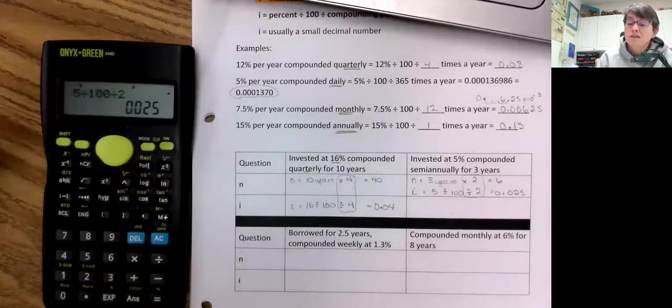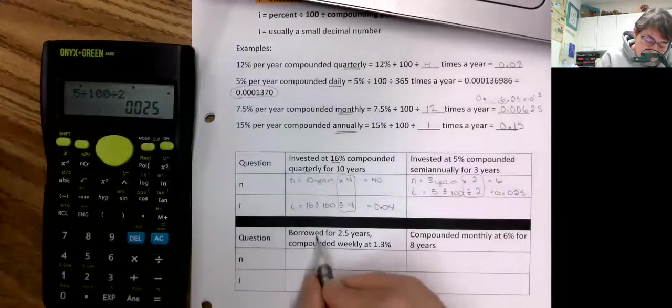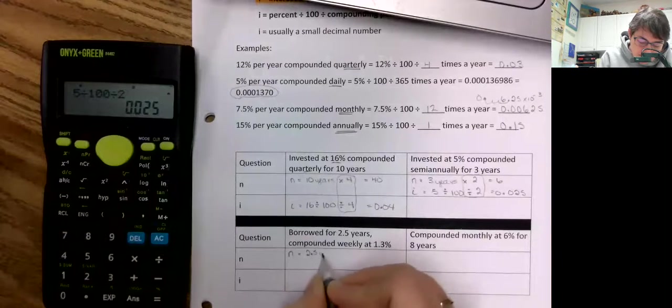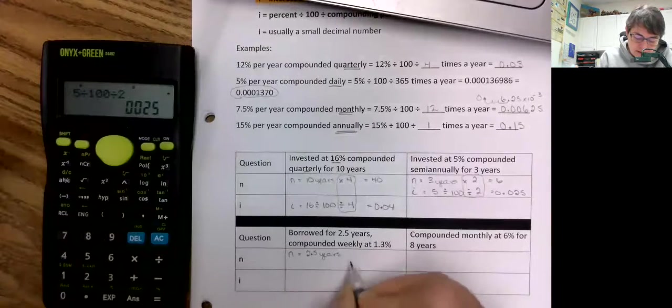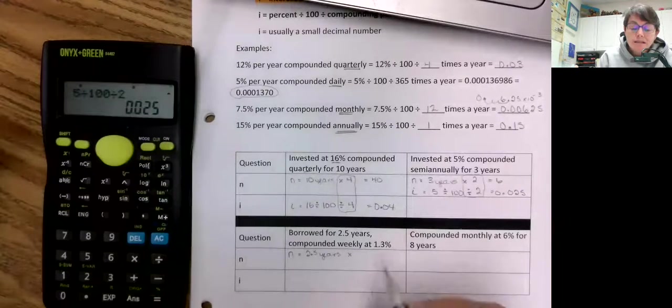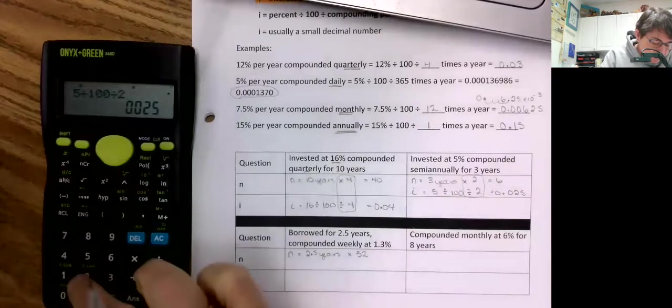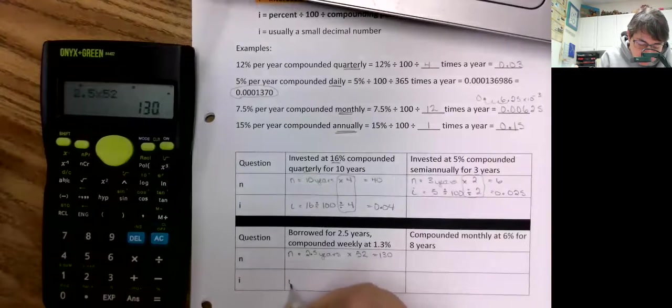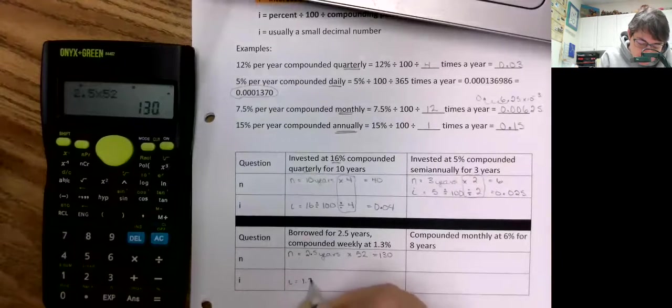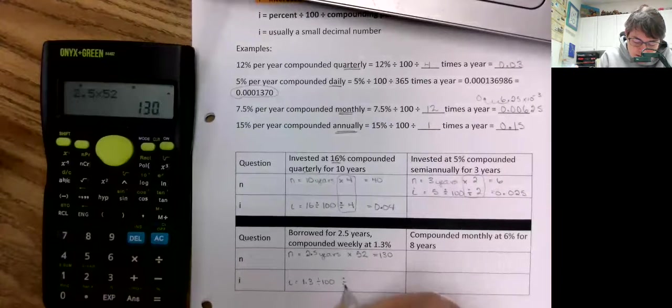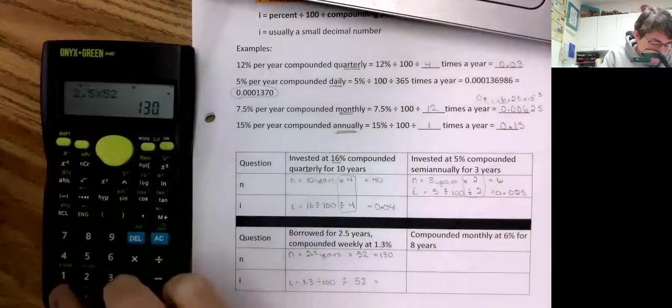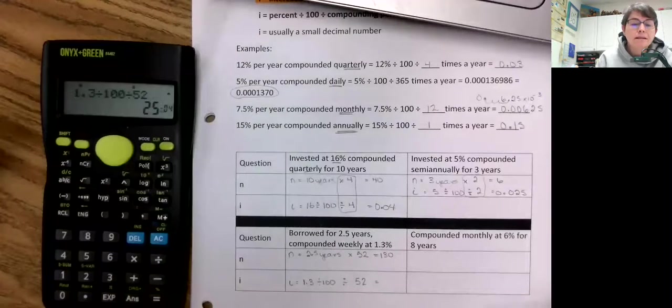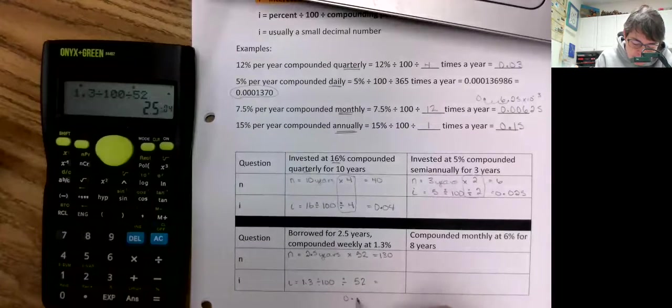All right, borrowed for 2.5 years compounded weekly at 1.3 percent. So n is 2.5 years times, let's see, 52. 2.5 times 52 is 130. And my interest is equal to 1.3 divided by 100 divided by 52. Oh, there went my calculator again, zero point zero zero zero zero...